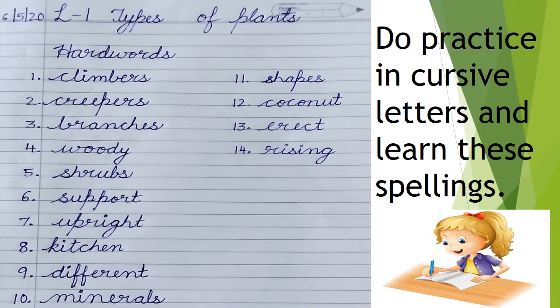Number 1: Climbers. Number 2: Creepers. Number 3: Branches. Number 4: Woody. Number 5: Shrubs. Number 6: Support. Number 7: Upright. Number 8: Kitchen. Number 9: Different. Number 10: Minerals. Number 11: Shapes. Number 12: Coconut. Number 13: Erect. Number 14: Rising.